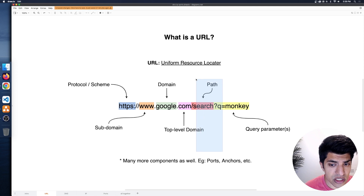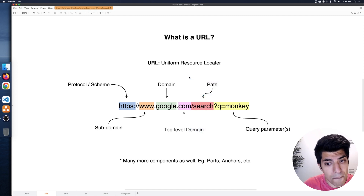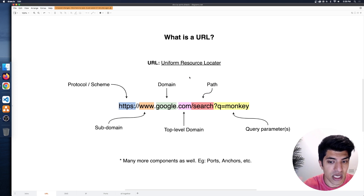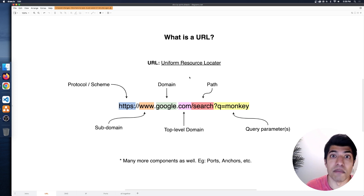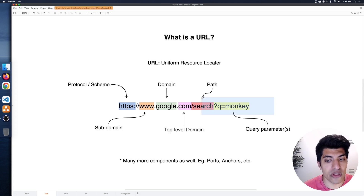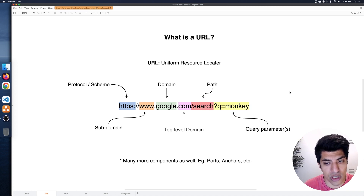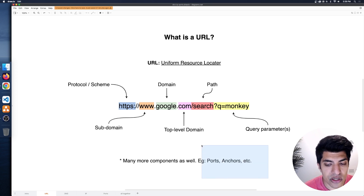Then there's what comes after the slash, usually called the path. This can be quite long — in this case it's just slash search, but I'm sure you've seen URLs like slash search slash profile slash users slash something something. That whole thing would be the path. At the very end of the path, sometimes optionally, we can have other things like query parameters or search parameters, or anchors.